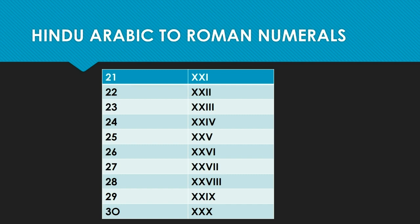Have a look at 21 to 30. Twenty-one will be 20 plus 1, so we write it as XX for 20 and I for 1, giving us XXI. Twenty-two will be 20 plus 2, so it will be XXII. Twenty-three will be XXIII. You have to follow the same thing for all the numbers in this range.